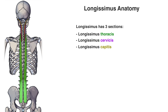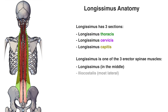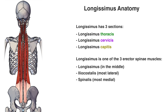The longissimus is part of a group of muscles called the erector spinae. Here you can see the longissimus highlighted in green amongst the other muscles of the erector spinae. Lateral to the longissimus is the iliocostalis, and medial to it is the spinalis muscle. Much like the longissimus, all of the other erector spinae muscles are comprised of three sections as well, which is why there appear to be a lot of different muscles in this picture.